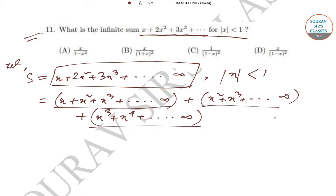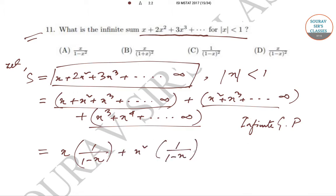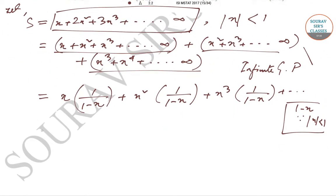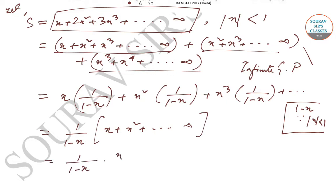Each of these series is an infinite geometric progression. Using the standard formula for the sum of an infinite geometric progression, we can write it as: x·(1/(1−x)) plus x²·(1/(1−x)) plus x³·(1/(1−x)) and so on. Since mod of x is less than one, this is valid. Taking 1/(1−x) as a common factor, we get (1/(1−x)) times the series x plus x² plus x³ plus ... to infinity.